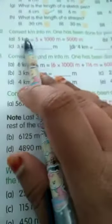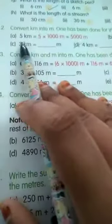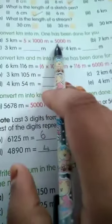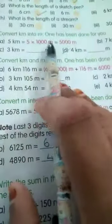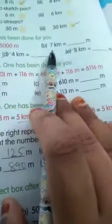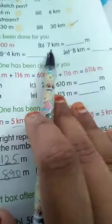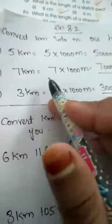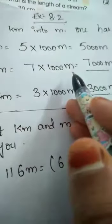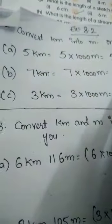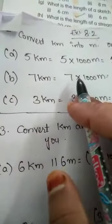So convert kilometer into meter. One has been done for you. First one: 5 kilometer equals to 5 into 1000 meter, equals to 5000 meter. So let us solve the second one. 7 kilometer equals to dash meter. 7 kilometer equals to 7 into 1000 meter, equals to 7000 meter. So this is our second problem.